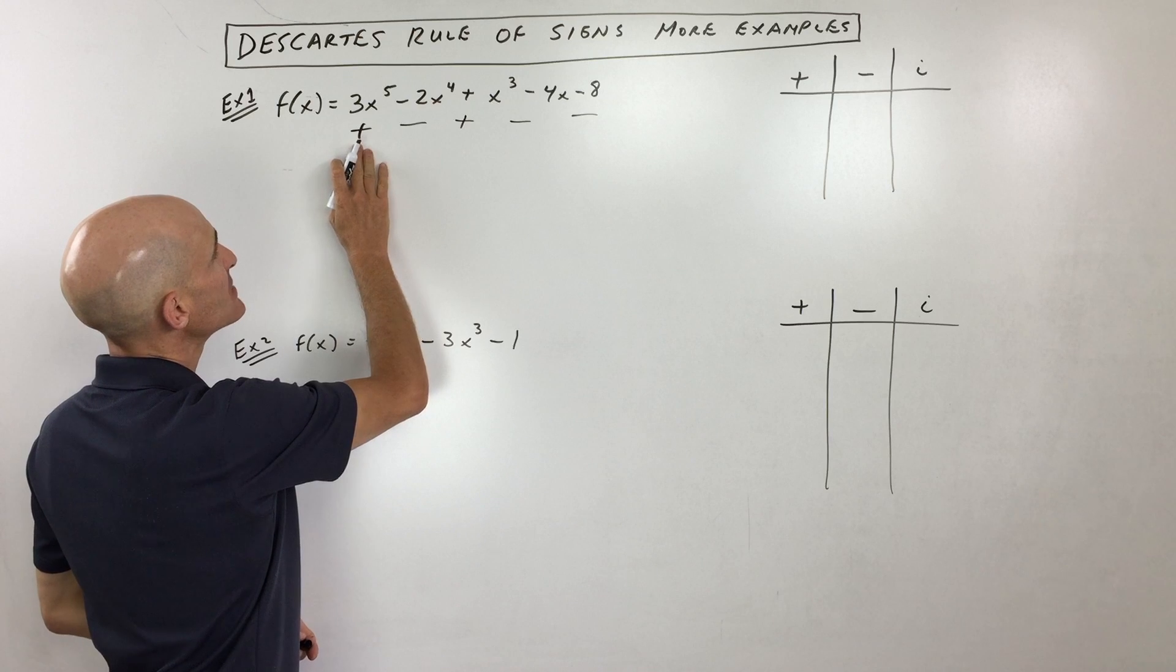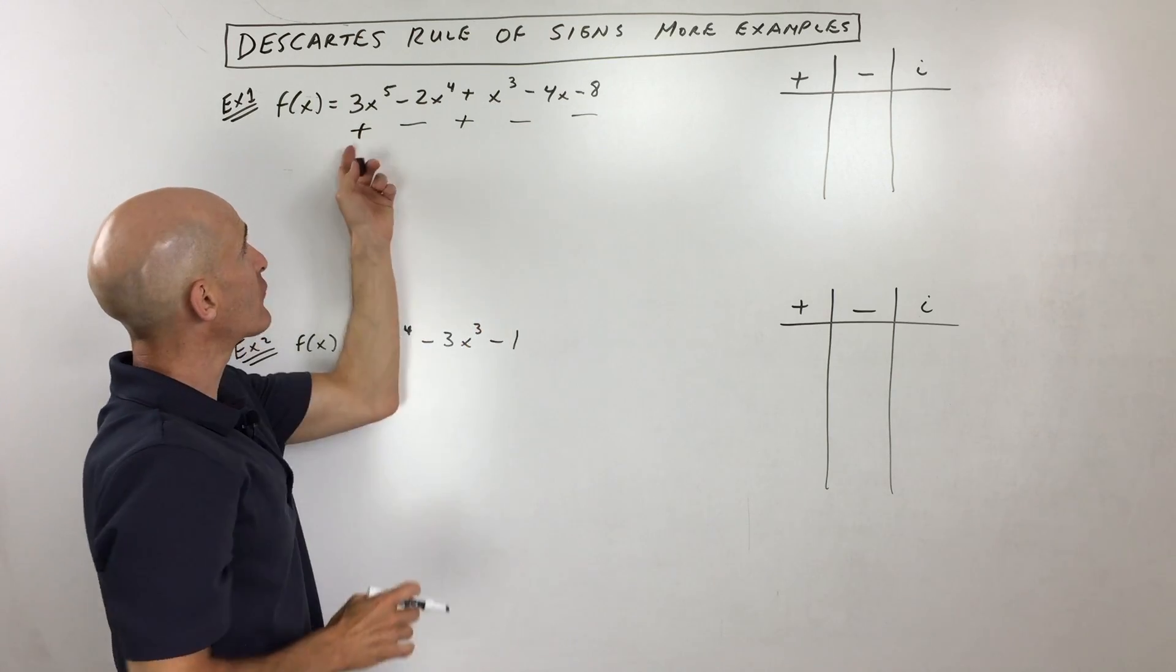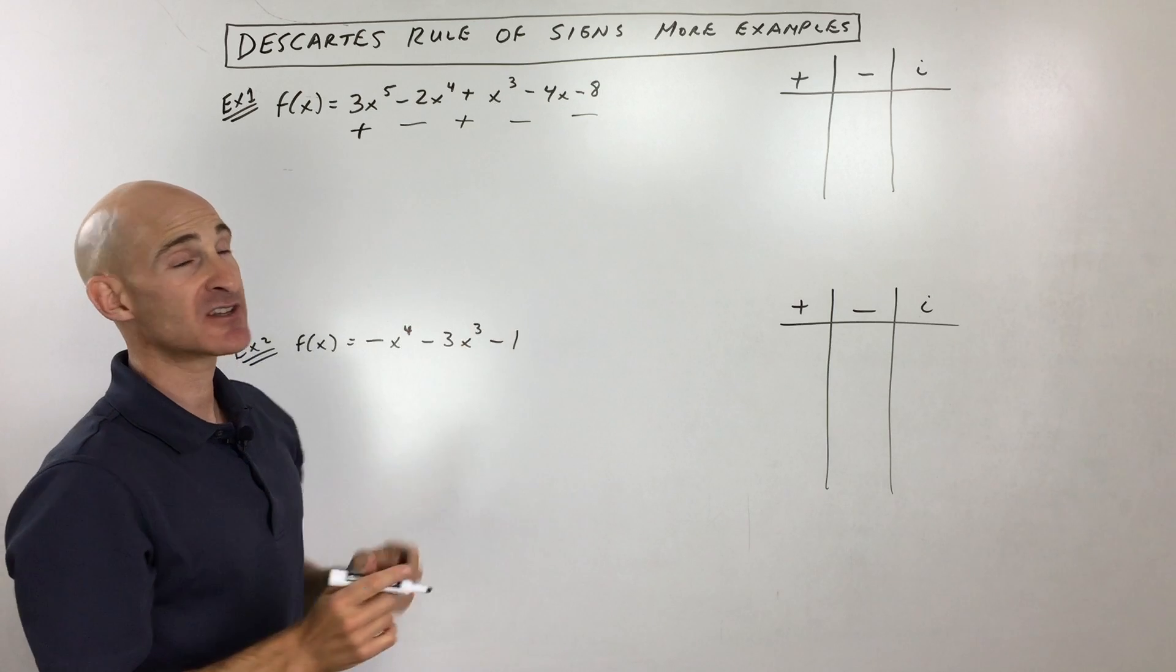So here you can see we've got positive 3x to the fifth, negative 2x to the fourth, and so on. So I've written down the signs, but let's check to see how many times it switches.